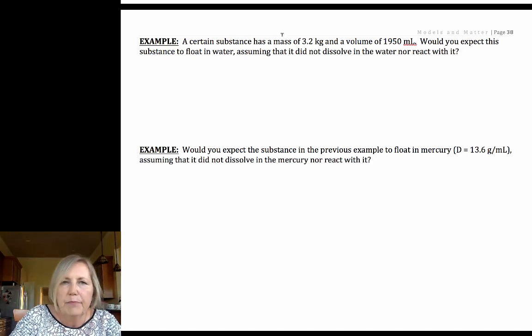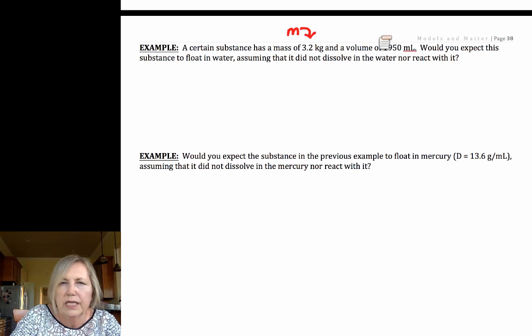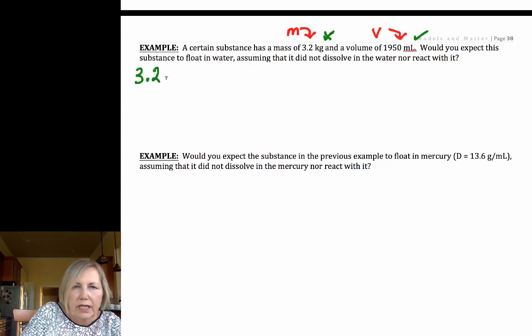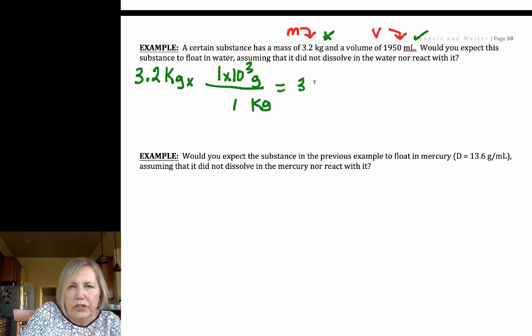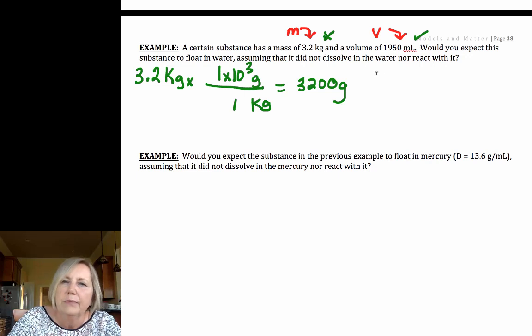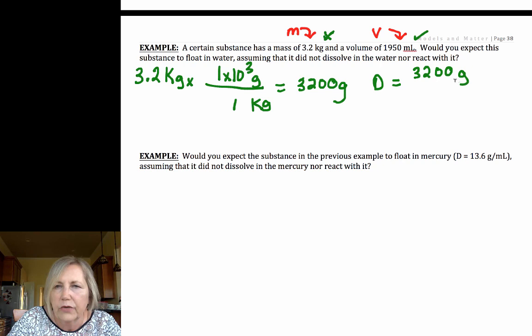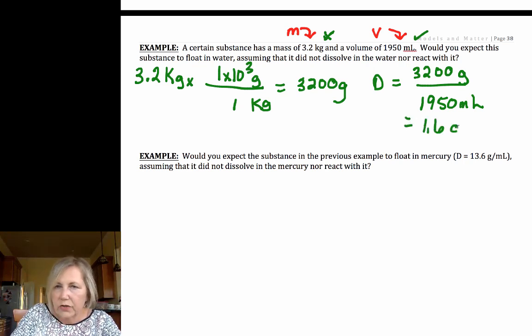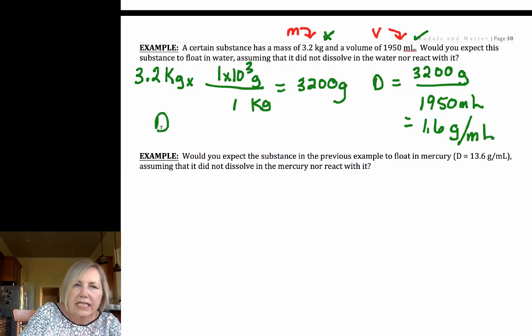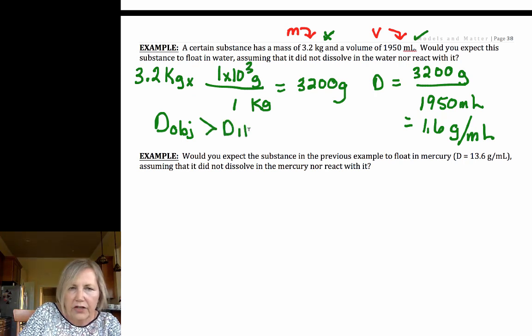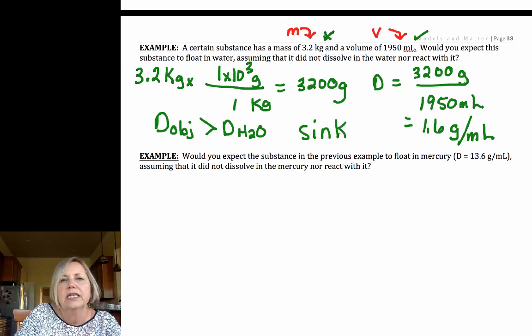I have a substance. It has a mass equal to 3.2 kilograms. It has a volume equal to 19.5 milliliters. That's another way of identifying those. You can list your givens. Check your units. Kilograms, not so much. Milliliters, yes. We have to convert kilograms to grams. 3.2 kilograms, I want to get rid of kilograms and go to grams. So I get 3,200 grams. Do math, show math. My density then would equal 3,200 grams for 1,950 milliliters. And I got 1.6 grams per milliliter. So the density of my object is greater than the density of water. And no, it's not going to float. It's going to sink.